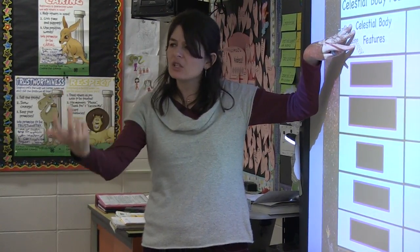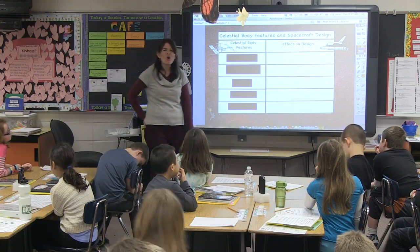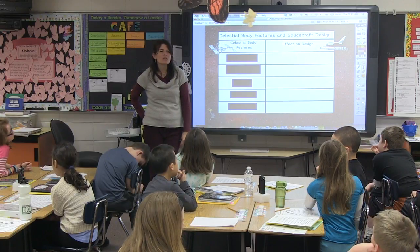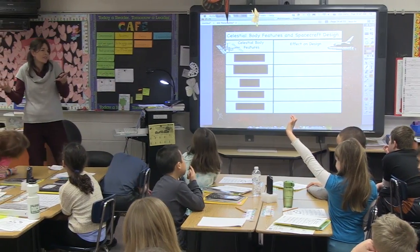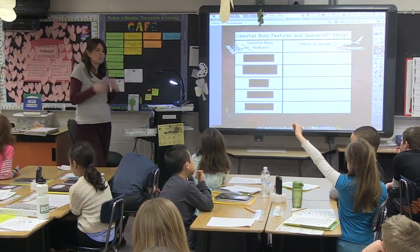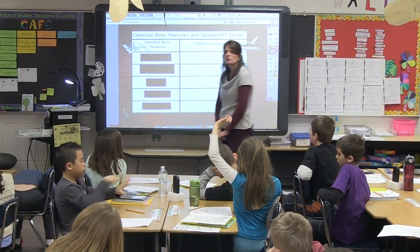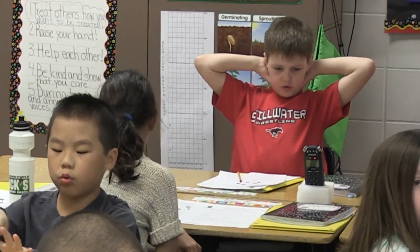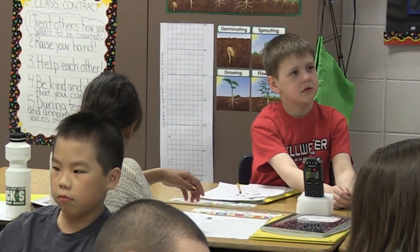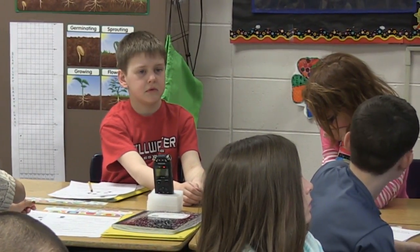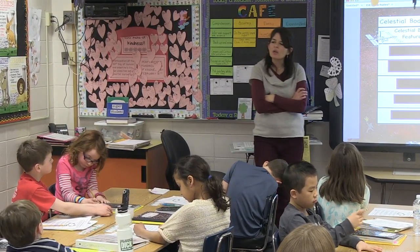We're going to talk together as a group about the moon, but then you guys are going to break into groups and each have a planet to work on. What do you think we need to know about celestial bodies? What are some of the things we might need to know if we're going to build something to go there? Owen says we need to make sure it's probably safe. What do you mean by safe — study it from not going?